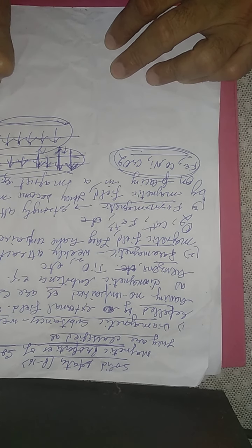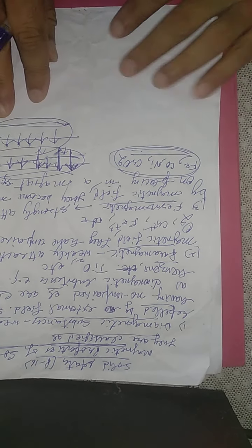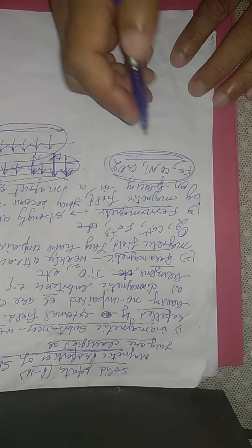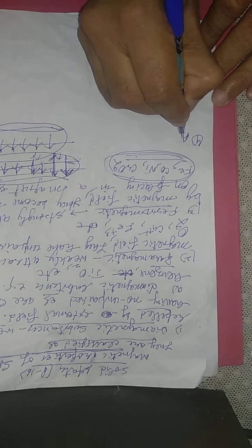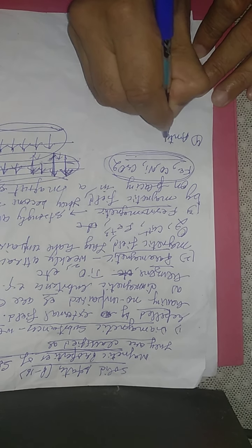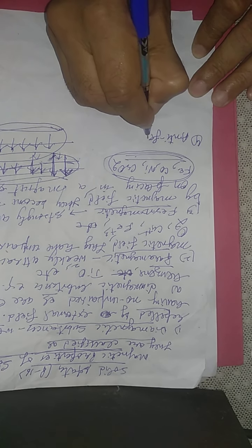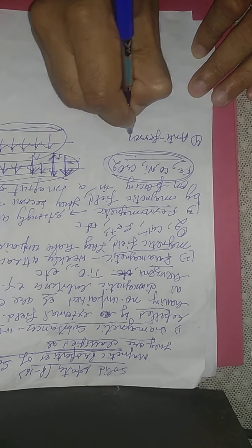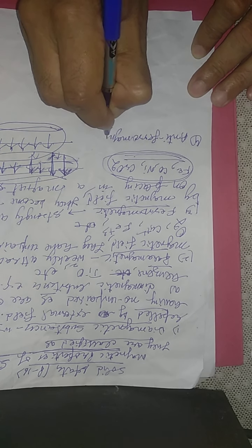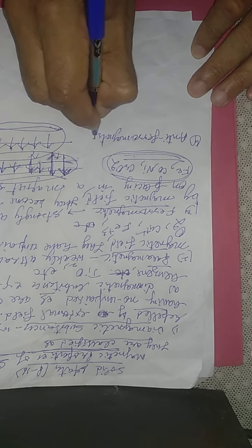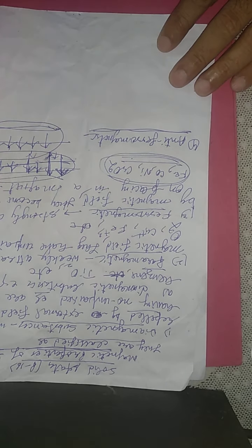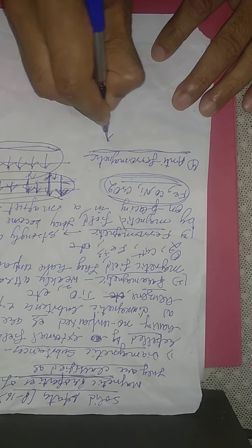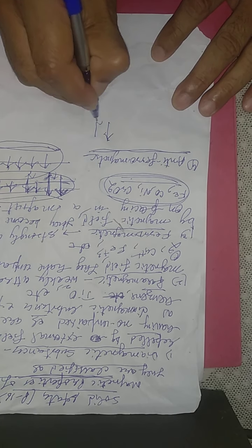Fourth type: Antiferromagnetic substances. These substances have unpaired electrons, but the alignment of the electrons is such that they cancel each other out.